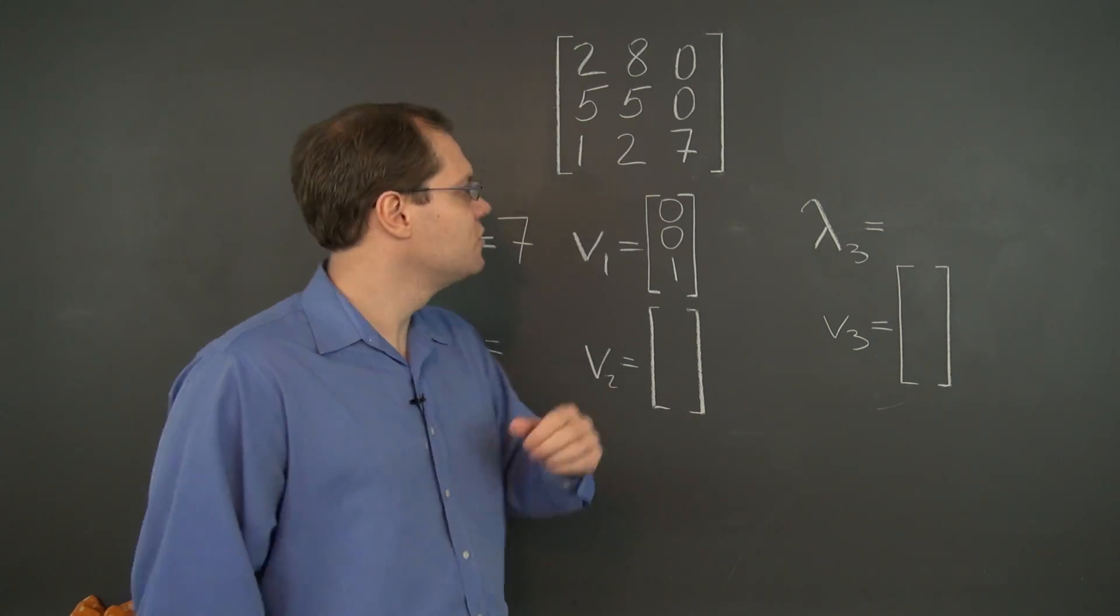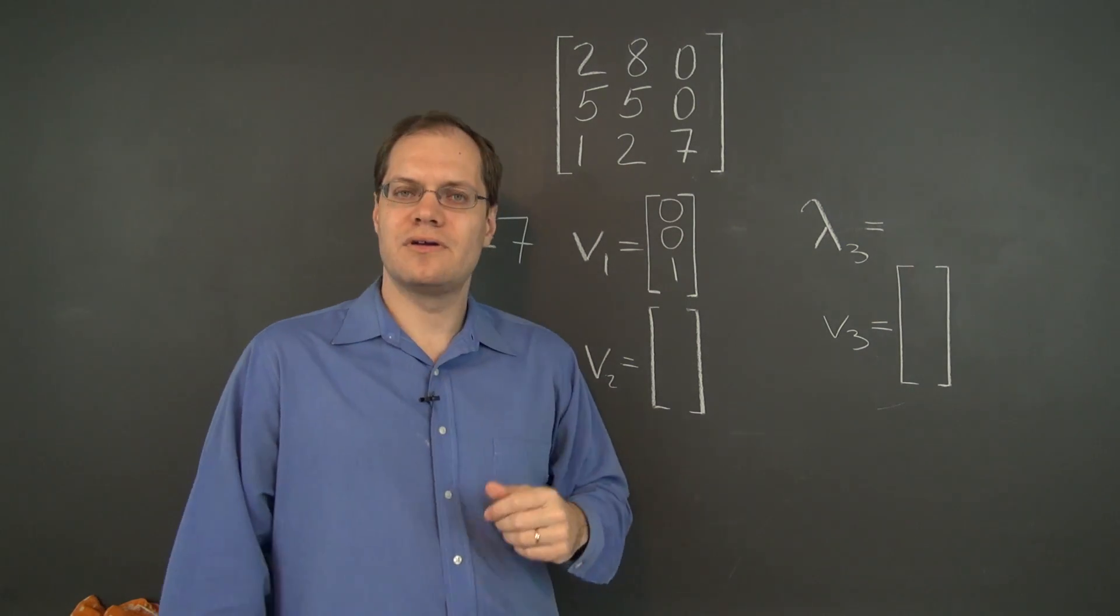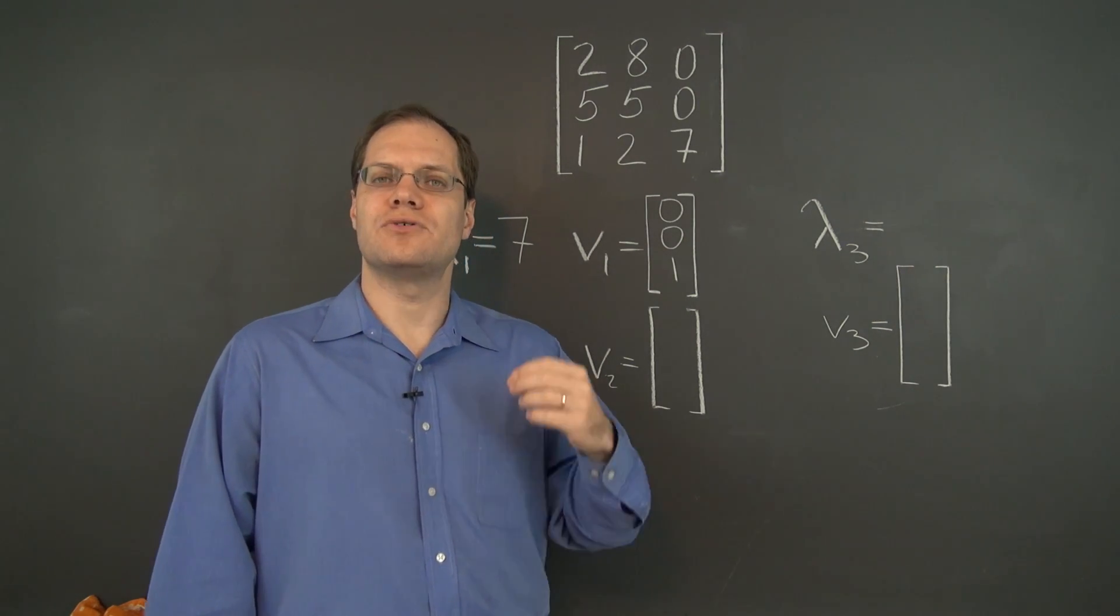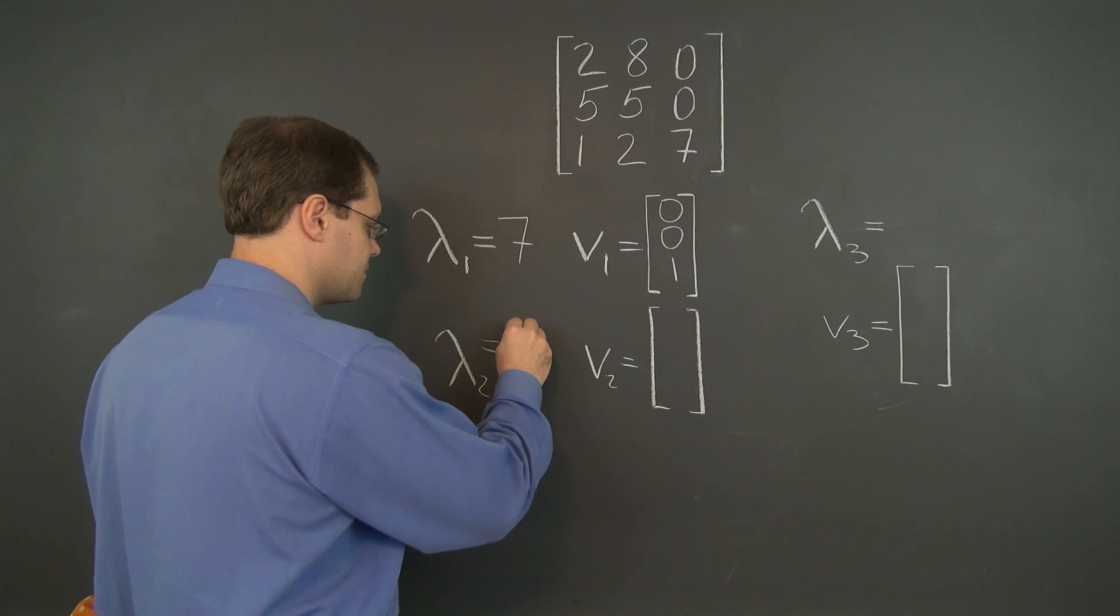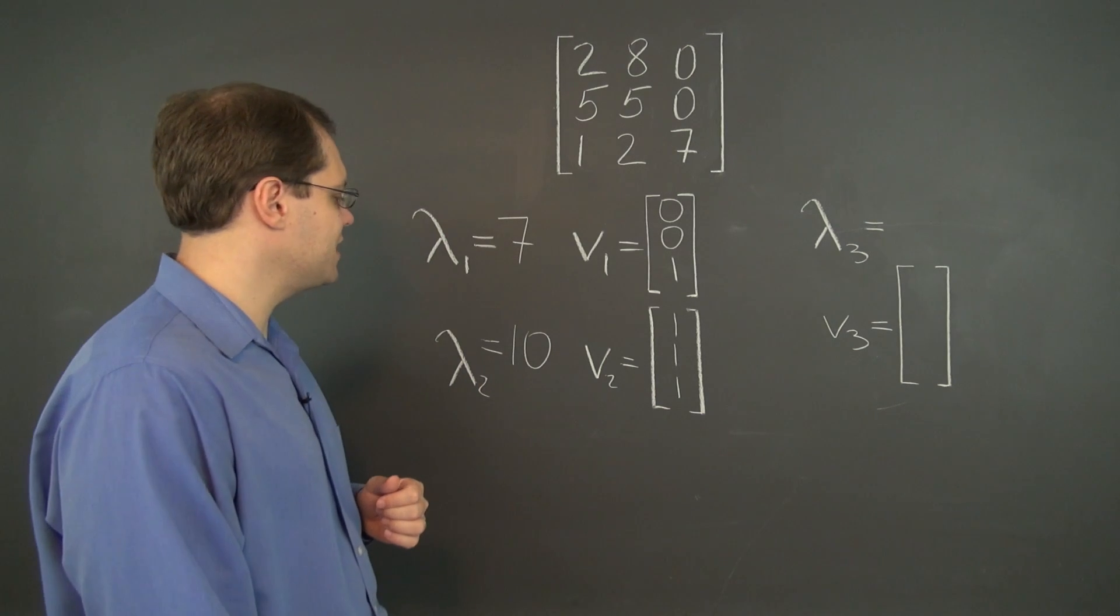Another eigenvalue we see from every row adding up to the same number, that is 10. So 10 is an eigenvalue, and (1, 1, 1) is the corresponding eigenvector.